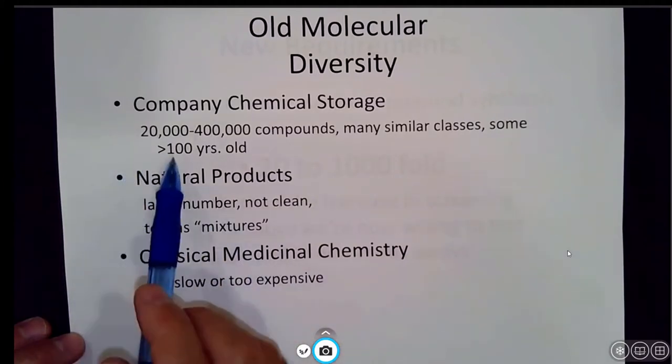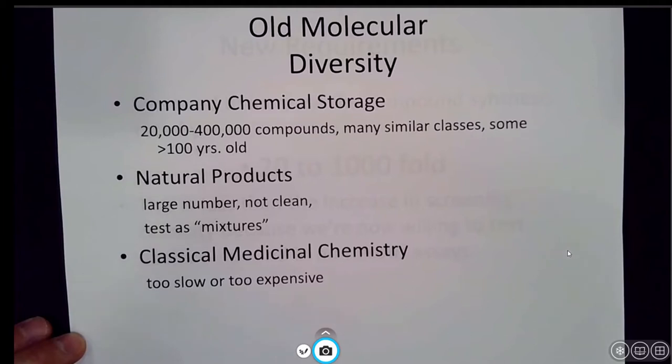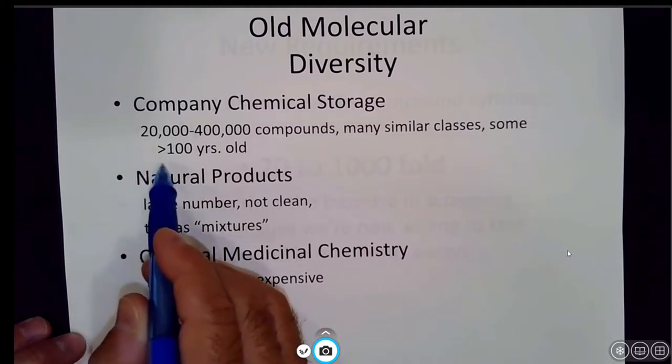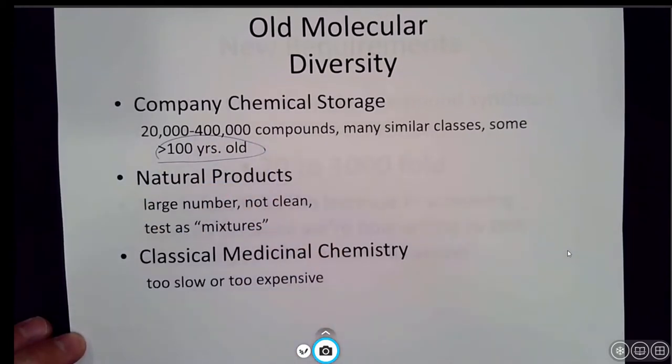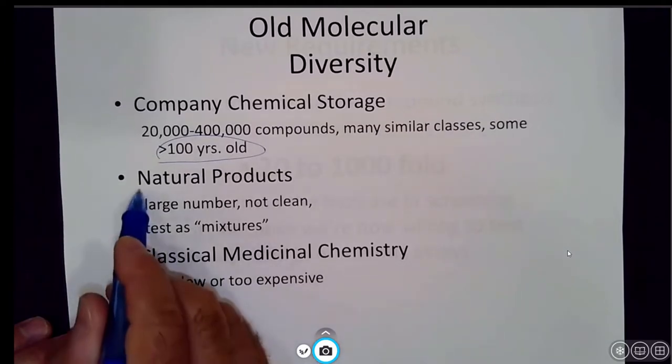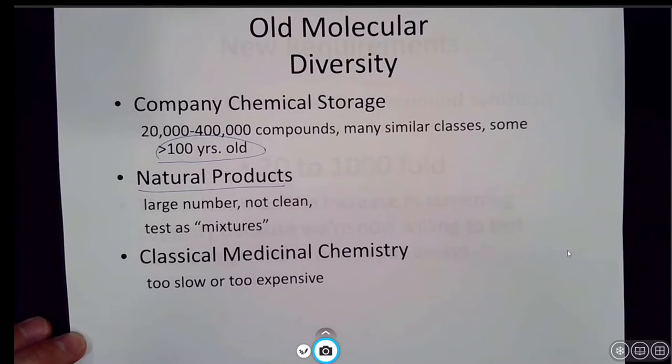Old molecular diversity involved companies and researchers making compounds that were in some cases greater than 100 years old. You could get storage of these compounds - 20,000 to over 400,000 compounds, many similar compounds that would just sit in a freezer not really doing much. A lot of medicinal chemistry is also inspired by natural products. Natural products have very interesting and complex structures - this was a useful and clean way to get compounds. But often through natural product extraction or testing them you would get a mixture of compounds, and they were not particularly clean. It was sometimes very difficult to identify what molecular entity was the one eliciting that particular biological response.